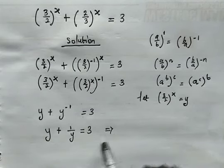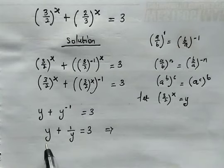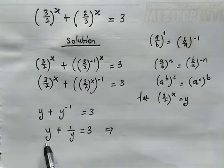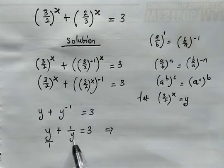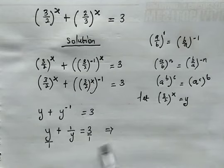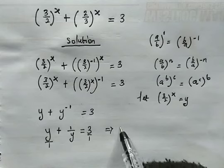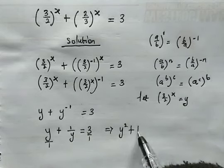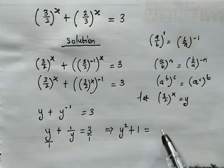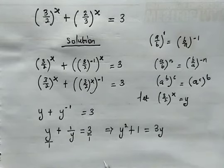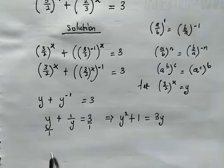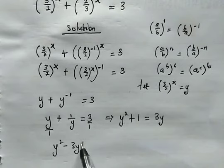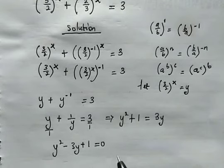Now let us go ahead and multiply each term from both sides by y, because the LCM of 1, y, and 1 is y. So here, y times y gives us y squared, plus y times 1 over y — that is 1 — this is equal to 3 times y, which gives us 3y. Now let us subtract 3y from both sides. We have y squared minus 3y plus 1 equals 0.